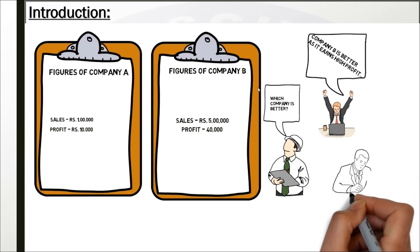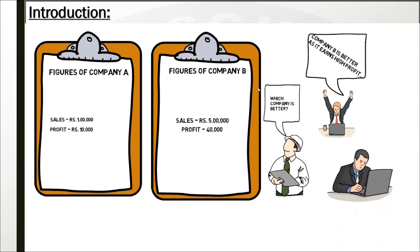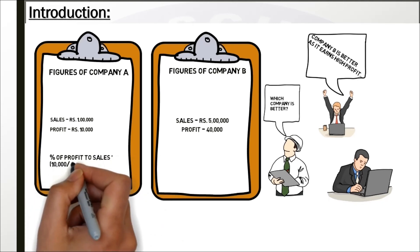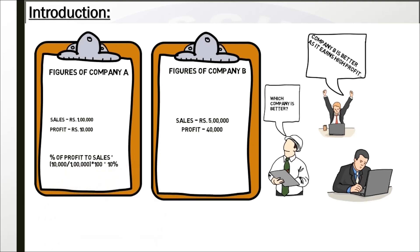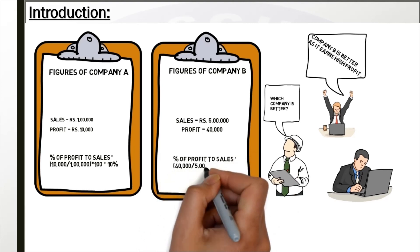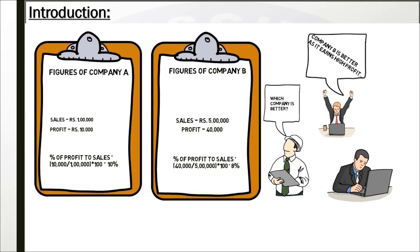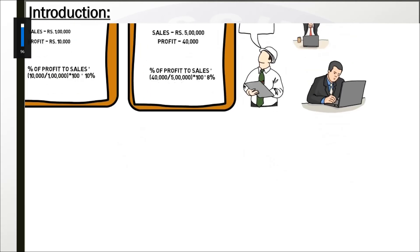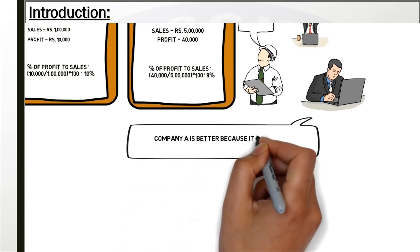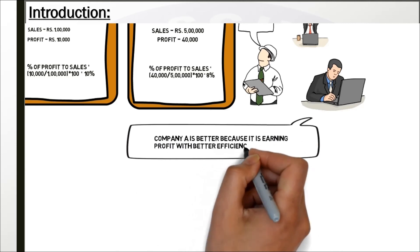But as a commerce student, you will do some calculations. You calculate profit as a percentage of sales. For Company A: 10,000 divided by 1 lakh multiplied by 100 equals 10%. For Company B: 40,000 divided by 5 lakh multiplied by 100 equals only 8%. So Company A is earning 10% on its sales while Company B earns only 8%. Therefore, Company A is better because it is earning profit with greater efficiency.